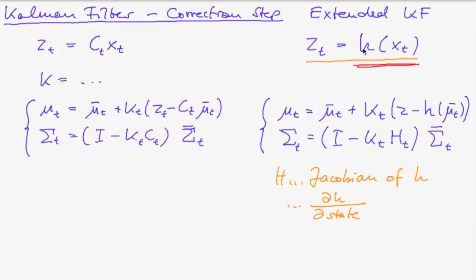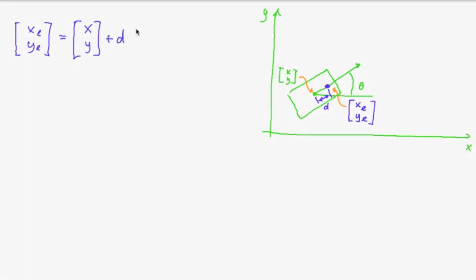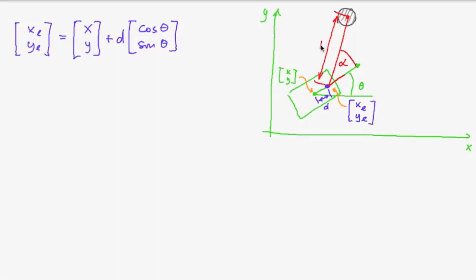Now let's look at the function defining the relationship between our state and our measurements. Our robot is somewhere in the global xy plane with heading theta. The laser scanner does not coincide with the robot's center — there is a displacement d, denoted as xl and yl. The laser scanner position equals the robot's xy position plus the displacement times the unit vector in the direction of the heading. The laser scanner gives us an angle alpha relative to its orientation, and also the distance r. The landmark has coordinates xm and ym.